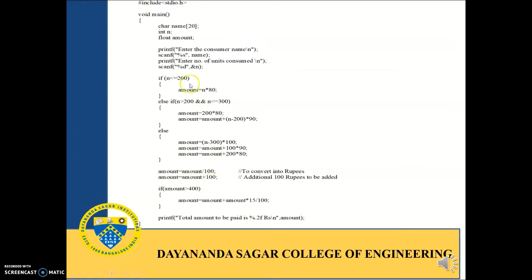Whatever may be the number of units consumed, the bill generated will be printed here as our output. To keep only two digits after the decimal point, we are using the format specifier that is point 2f. This completes our lab program 3.